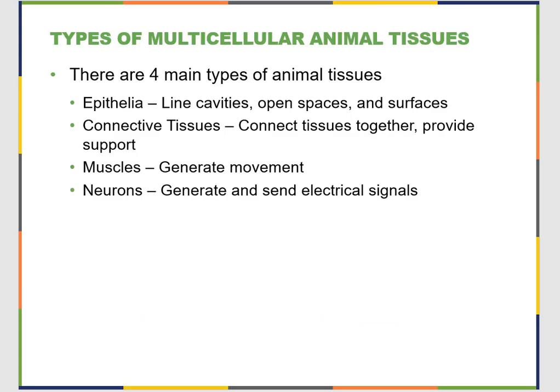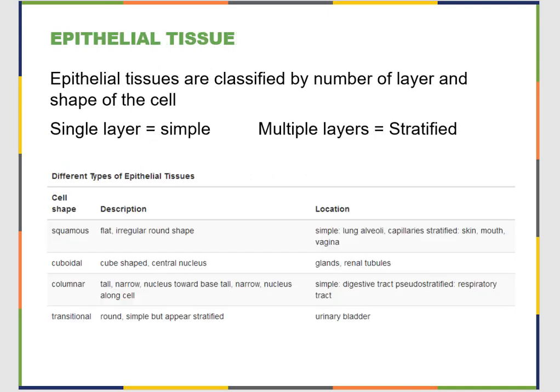There are four types of multicellular tissues in animals. Epithelial tissue lines a cavity, open space, or surface and either protects or secretes something. Connective tissues hold things together and provide support — any cell that has an extracellular matrix interacting with its environment. Muscle cells generate movement and control locomotion. Neurons or nervous tissue generate and send electrical signals.